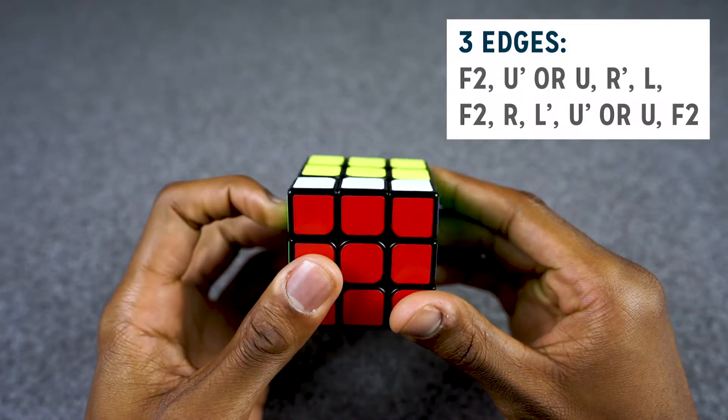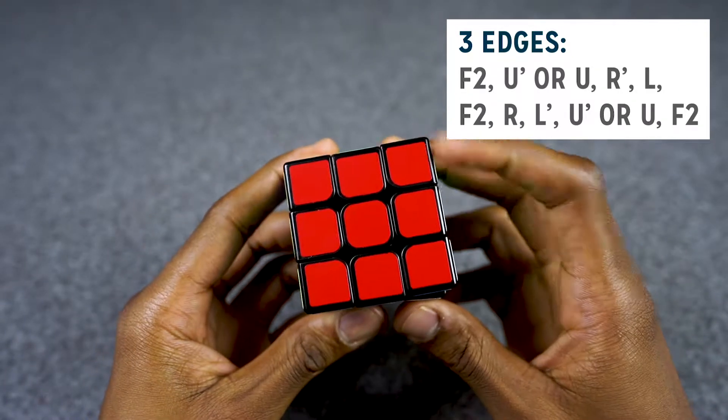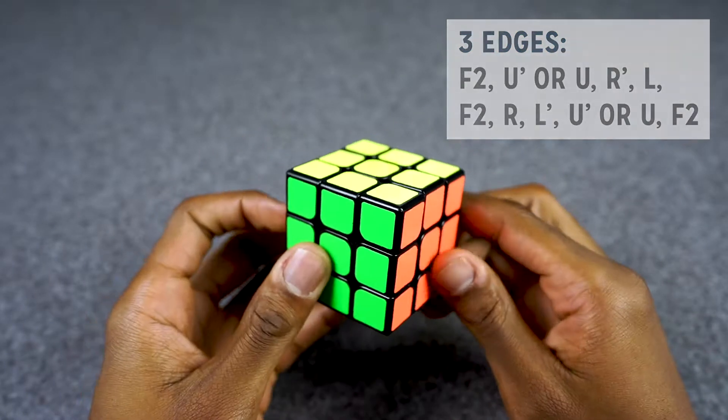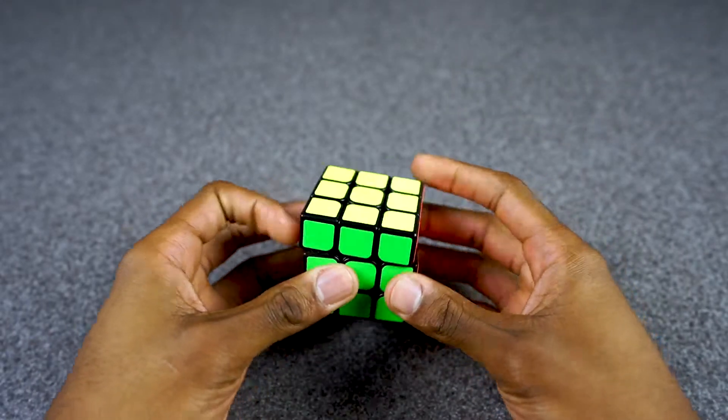So U prime, F2, and we are done solving the cube. That was one of the cases on how it can look.